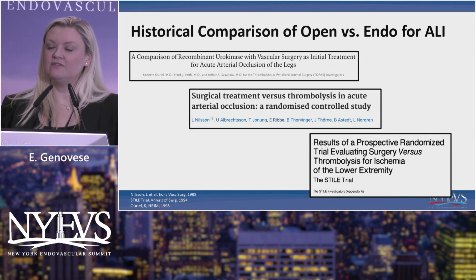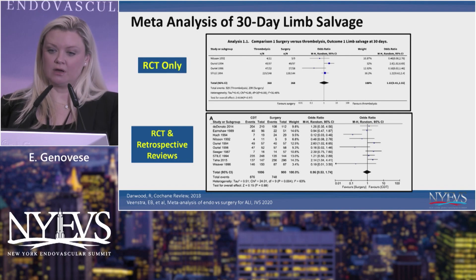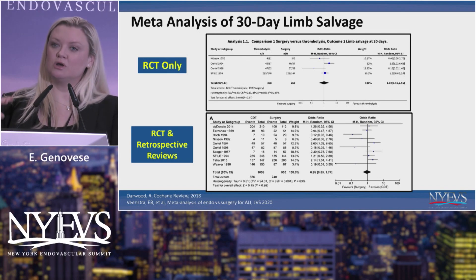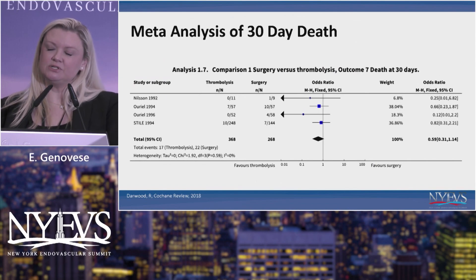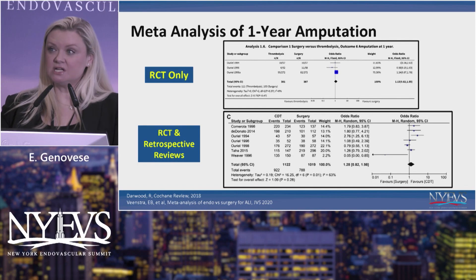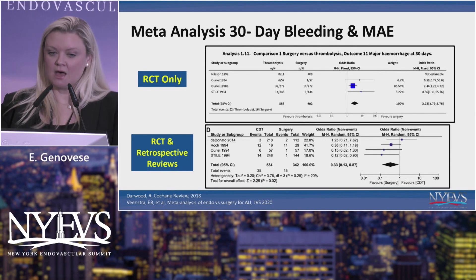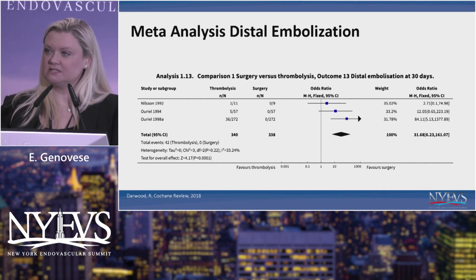Traditionally, when we talk about open versus endo, we have a lot of historic data comparing open revascularization to catheter-directed lysis. These are some of the landmark trials from the 90s. When you looked at a meta-analysis combining randomized control trials with retrospective studies, you can see there is no difference in 30-day outcomes with regards to limb salvage. There was also no statistical difference in mortality at 30 days, although it tended to favor a more minimally invasive procedure. One-year amputation rate was similar between the two groups. What you did start to notice was higher rates of bleeding complications with catheter-directed thrombolysis and higher rates of distal embolization.